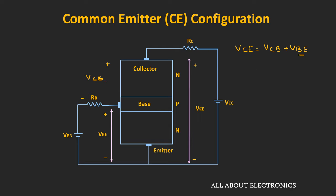For a fixed value of Vbe, if we increase Vce, then Vcb will also increase. As the value of Vcb increases, the reverse bias applied between the collector and base terminal also increases. For a given Vcb, a depletion region is created at the collector-to-base junction. As we increase Vcb, this depletion region gets wider, so the effective base width reduces. Due to that, the probability of recombination in the base region reduces, and most of the electrons get collected at the collector terminal — so the base current Ib will reduce.